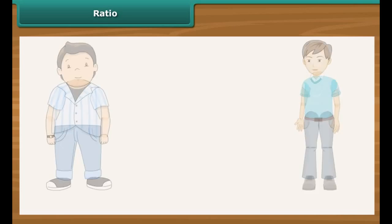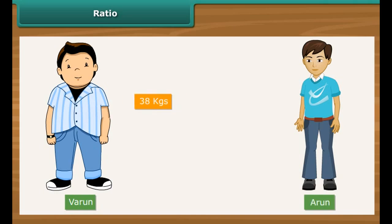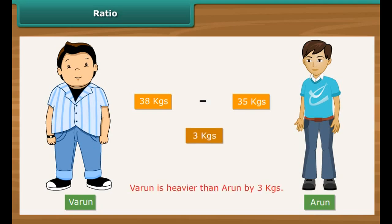We usually compare quantities and values by calculating their difference. For example, suppose the weights of two friends, Varun and Arun, are 38 kgs and 35 kgs respectively. We say that Varun is heavier than Arun by 38 minus 35, that is 3 kgs.